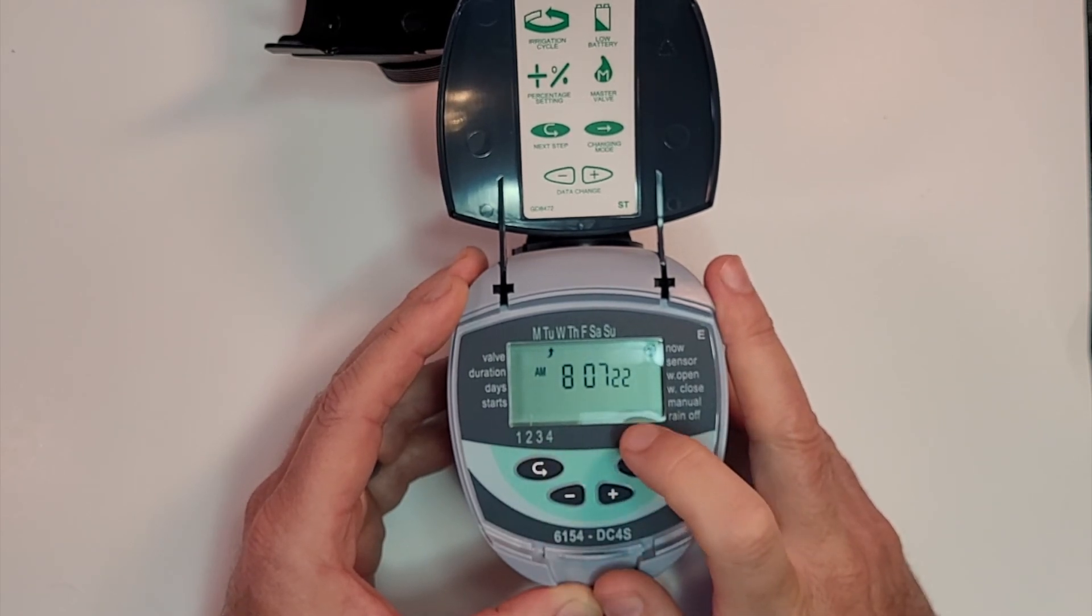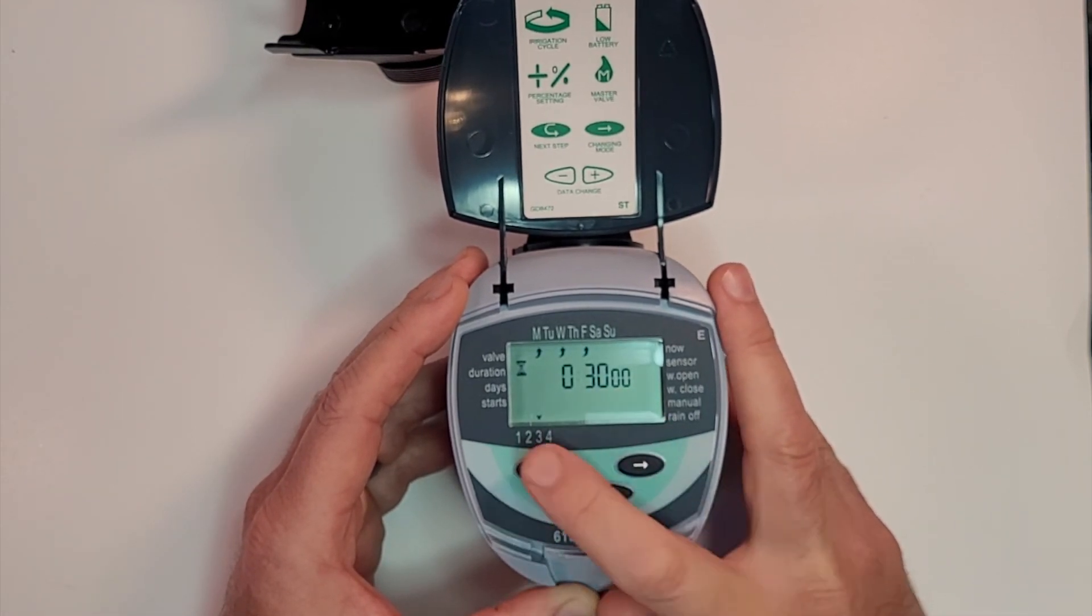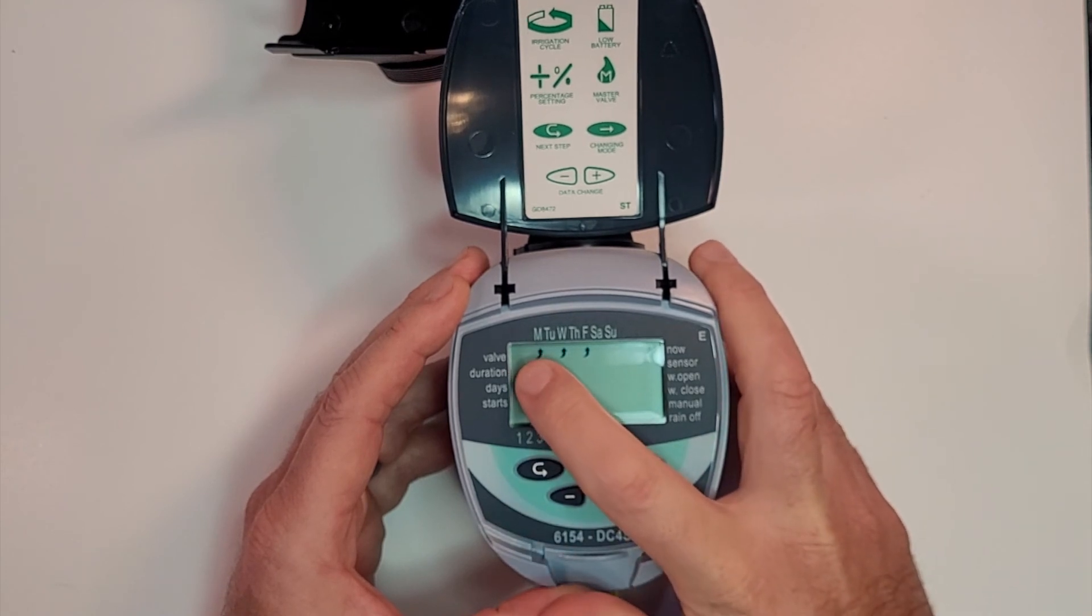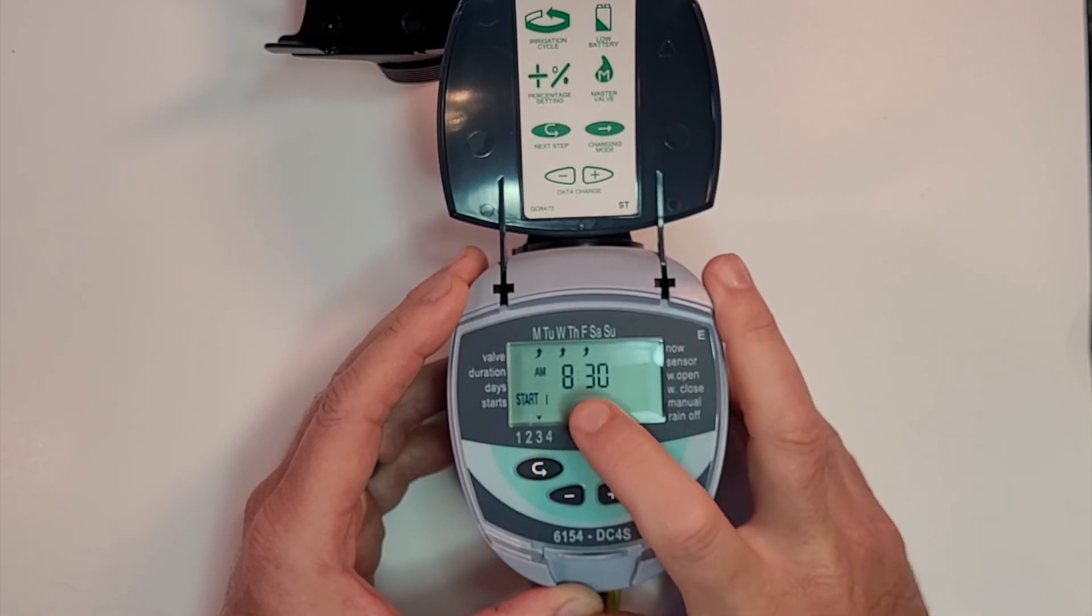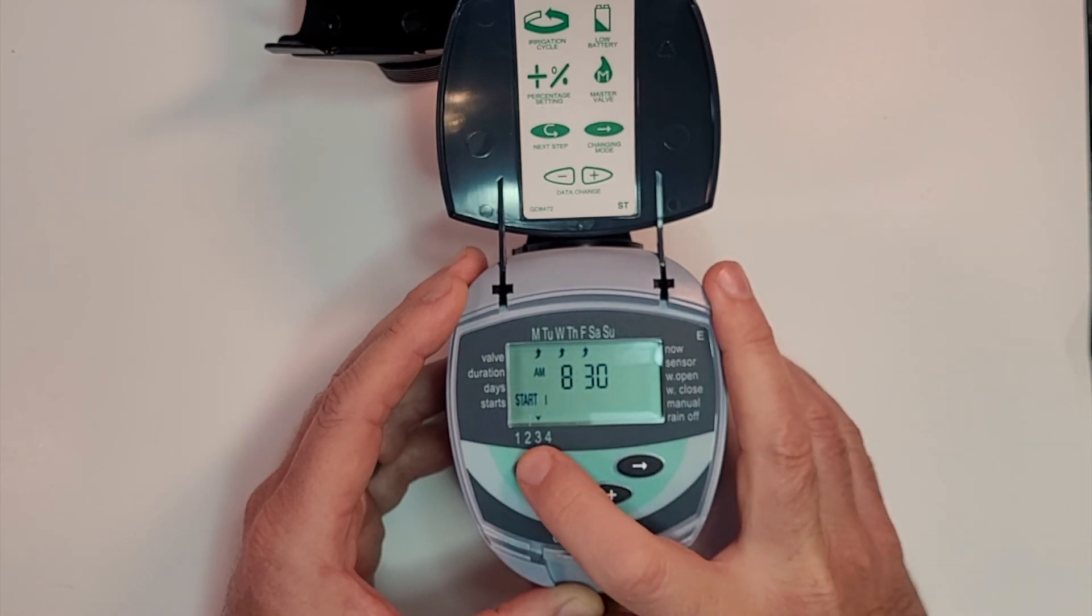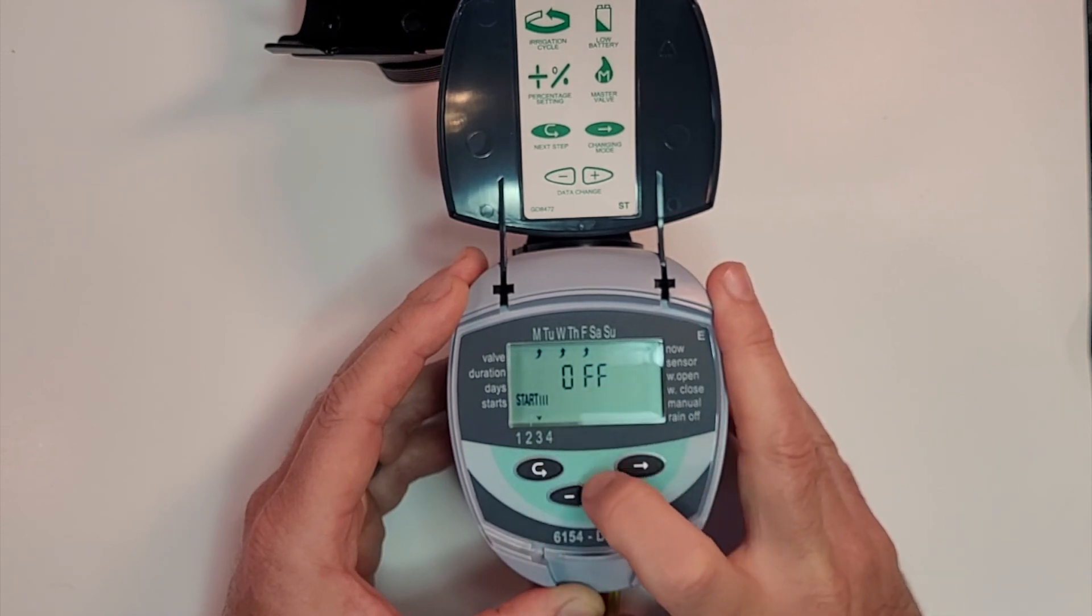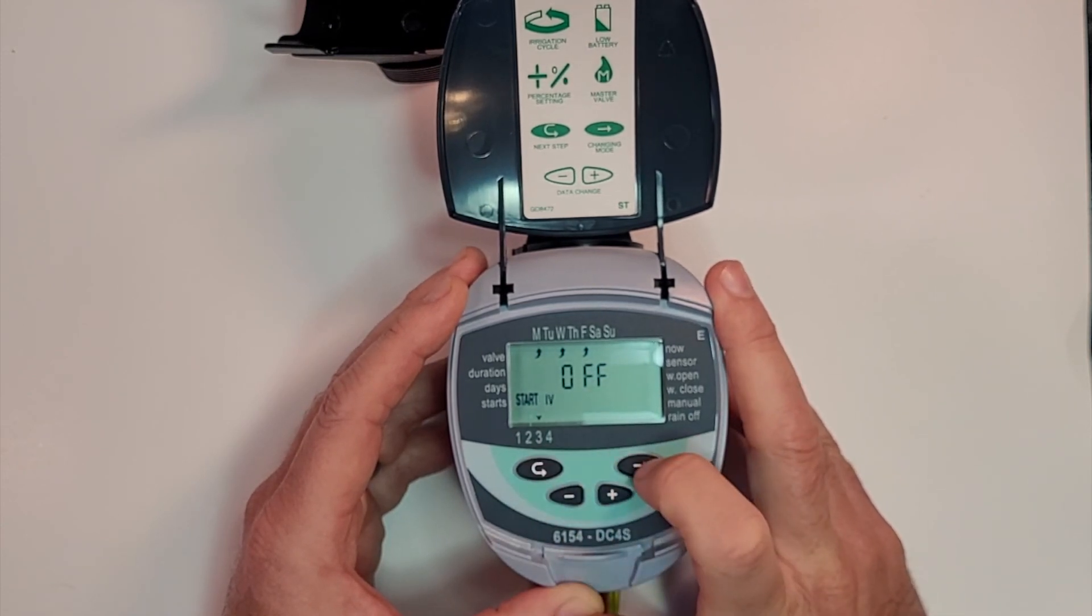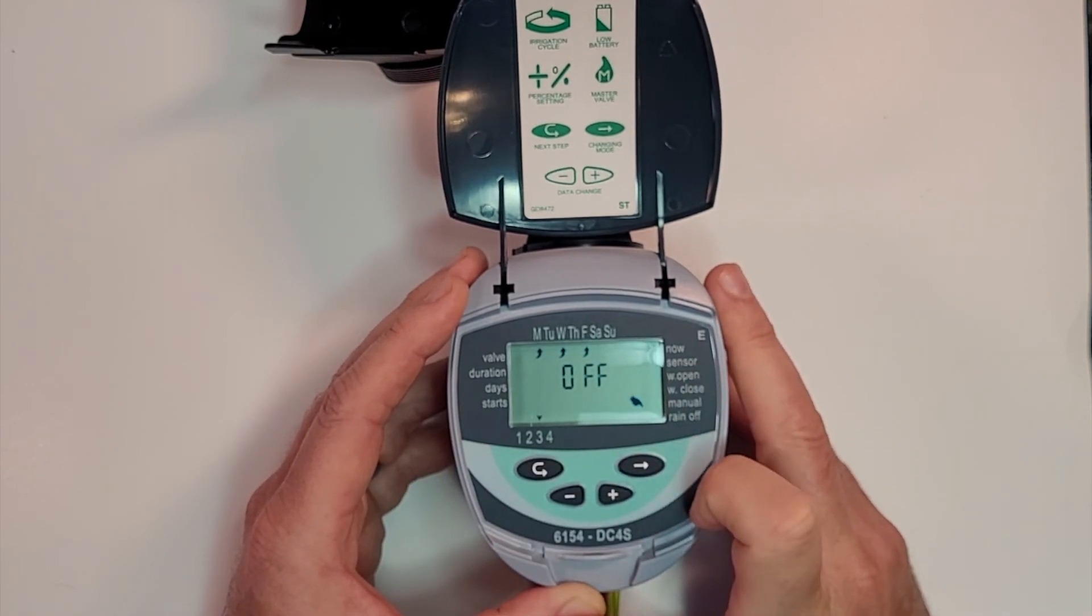We're going to press enter, enter, enter. So no sensor, no rain manual button. There's the time, we're working with valve number three of a 30 minute duration. It's going to run Monday, Wednesday, Friday, and it will start irrigating the first time at 8:30 AM. The second time, the second start time, is 5 PM. We have no third start time, we have no fourth start time, no rain sensor, and no manual button.